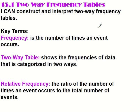And you'll see what that means here in a second. Relative frequency is the ratio of the number of times an event occurs compared to the total number of events — relative meaning how they are related or connected.